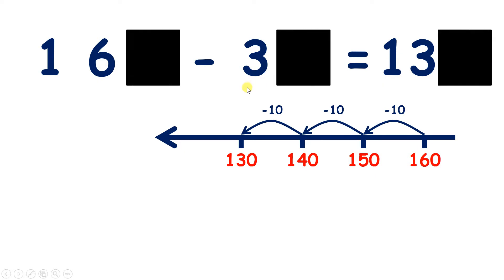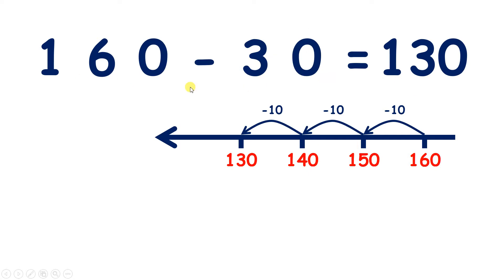Now if you know that 16 subtract 3 is 13, you know that 16 tens subtract 3 tens is 13 tens, or 160 subtract 30 equals 130.